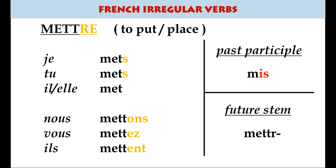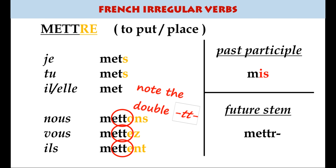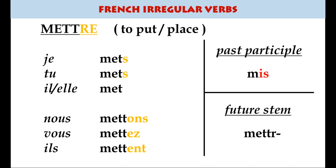Mettre is another re verb that then goes a bit strange. It follows the s, s, nothing pattern, but the irregularity is in the past participle: just as prendre goes to pris, mettre goes to mis — j'ai mis, meaning I have put or placed something somewhere.